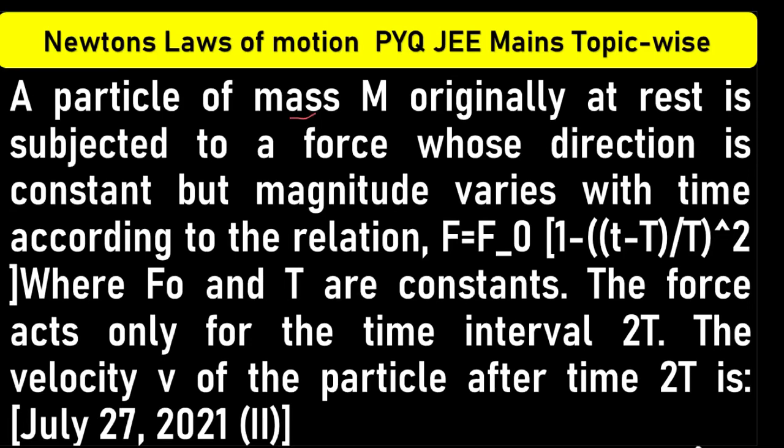A particle of mass m, originally at rest, is subjected to a force whose direction is constant but magnitude varies with time according to the relation F = F₀(1 - (t/T)²), where F₀ and T are constants. The force acts only for the time interval 2T. Find the velocity v of the particle after time 2T.